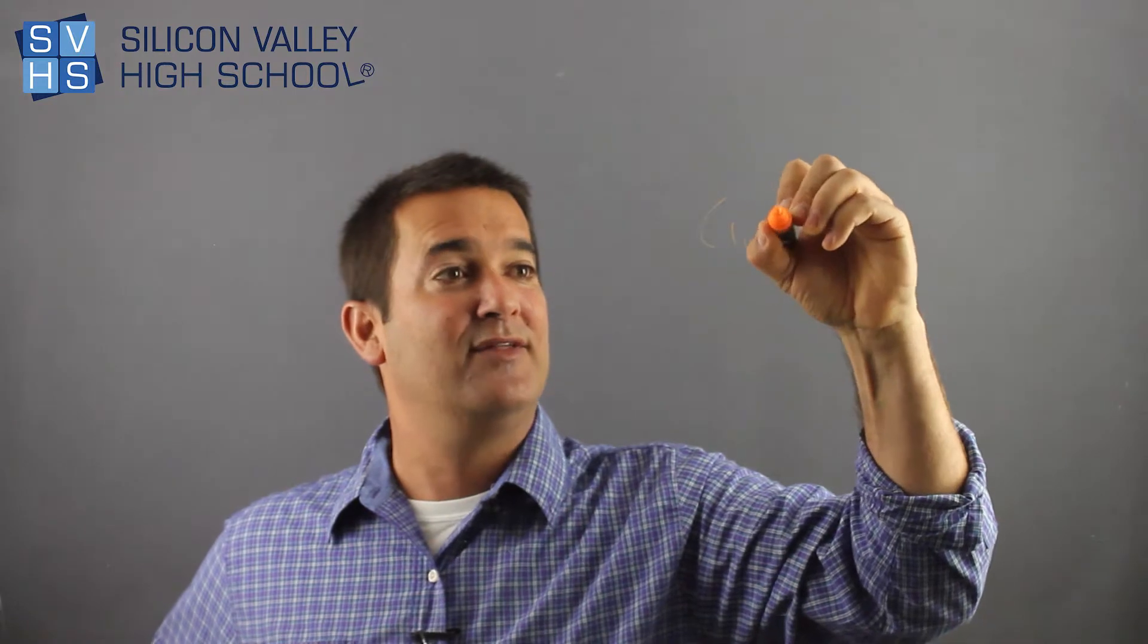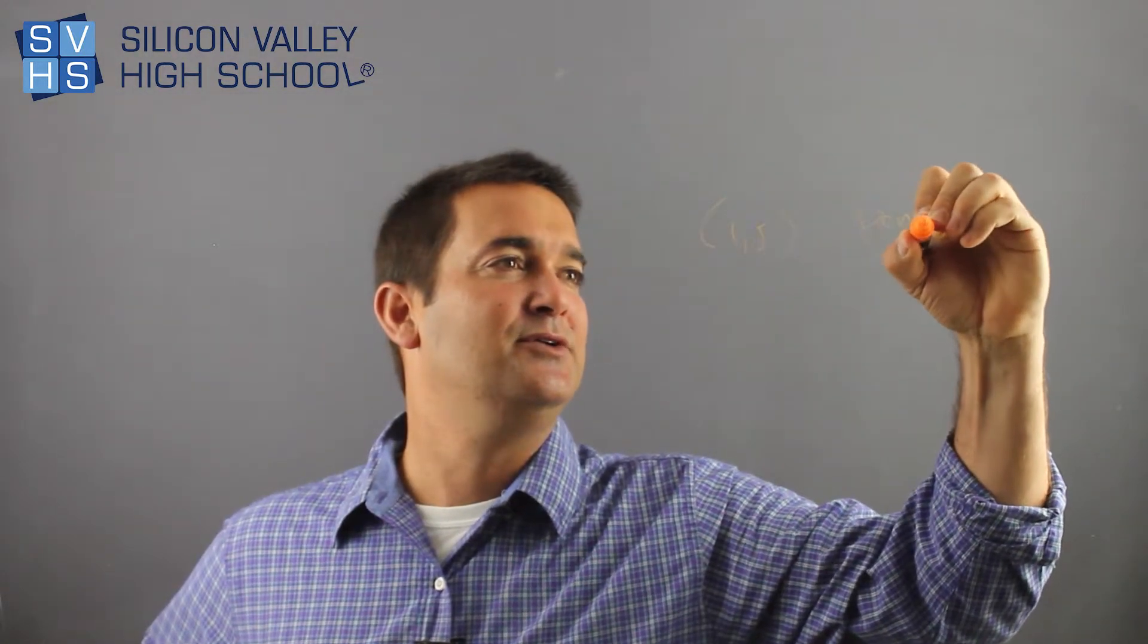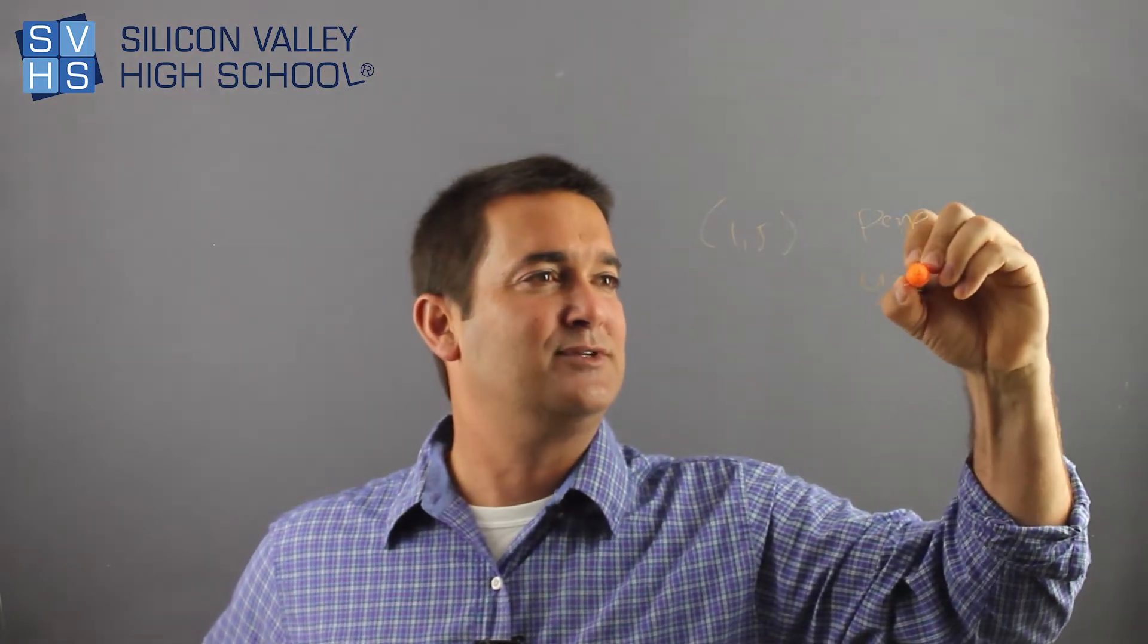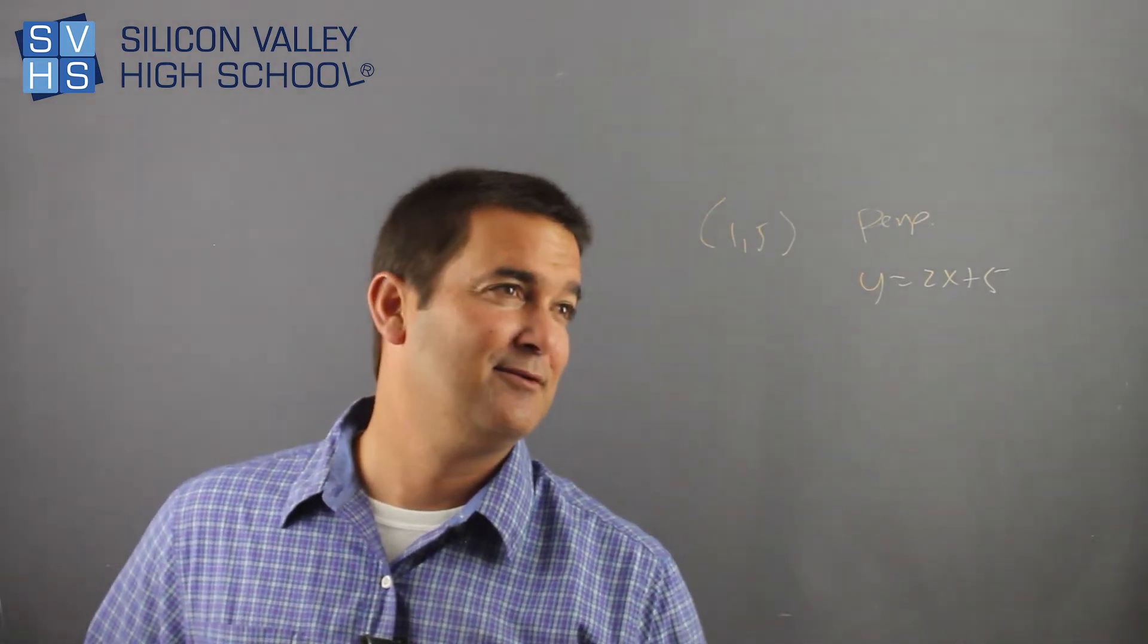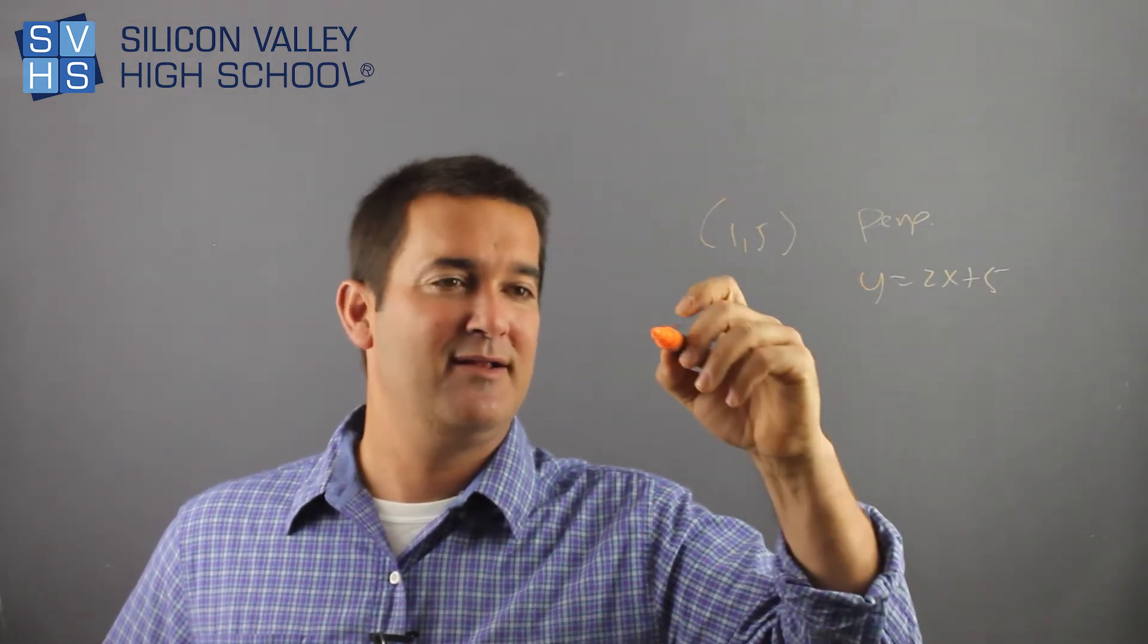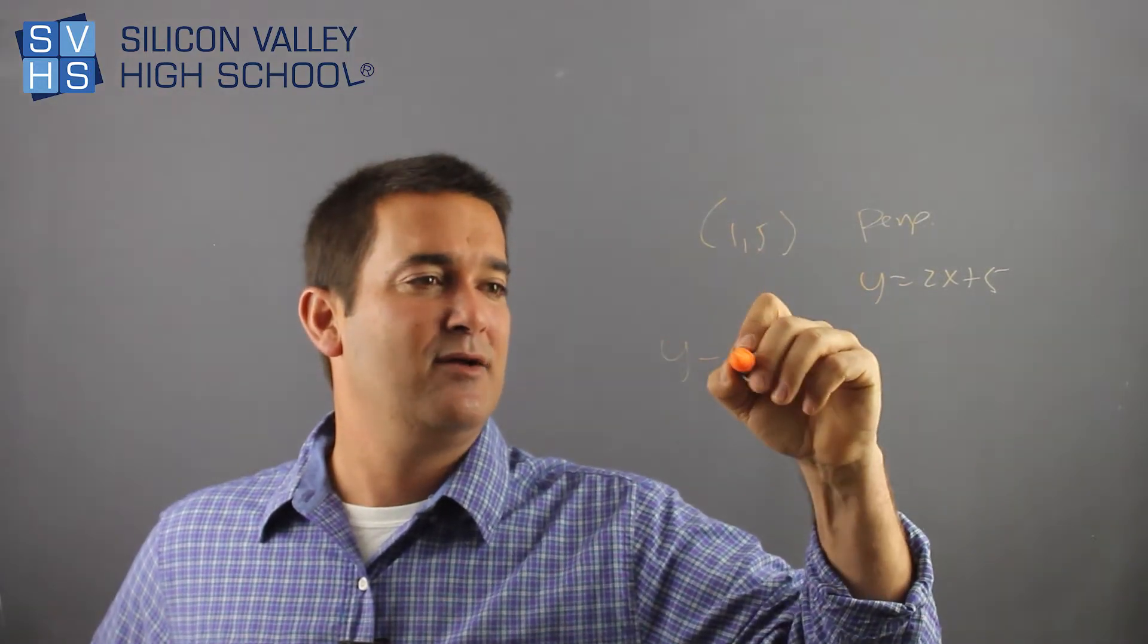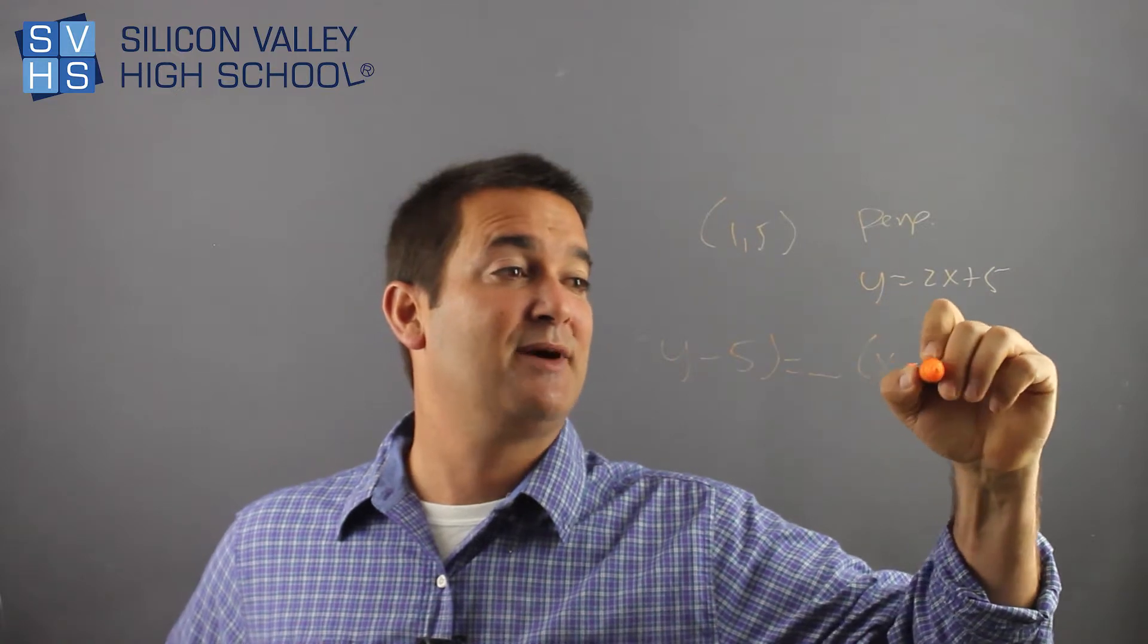Last example where we have to do that. So you'll have a point, one five, and they'll say oh, and also this line is perpendicular to this other line that we have. So something like y equals two x plus five. What do I do here? First let's do point-slope form.